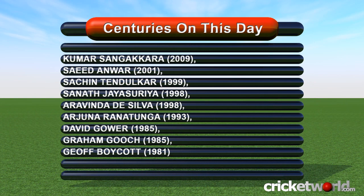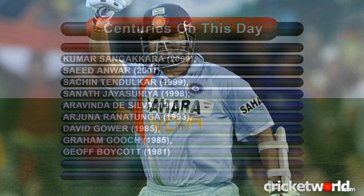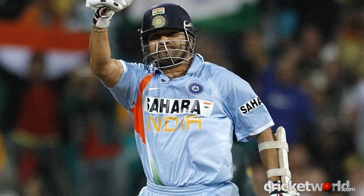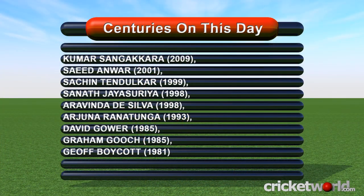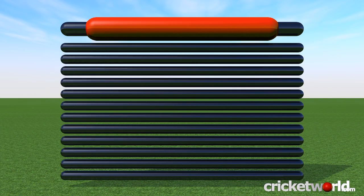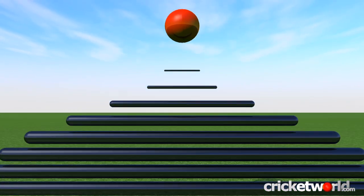And to finish: in 1999, Sachin Tendulkar scored 120 in 141 deliveries against Sri Lanka in the Iowa Cup, a one-day international tri-series tournament in Sri Lanka. India went on to win that game by 23 runs in Colombo.